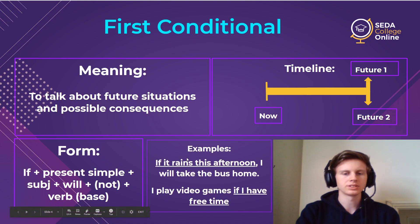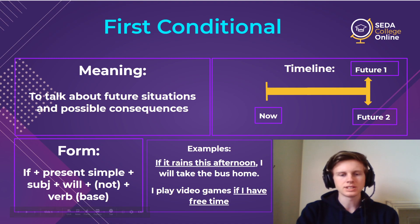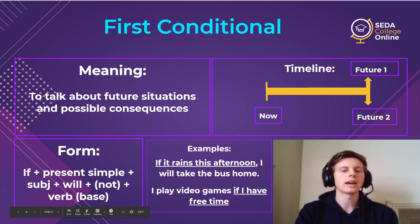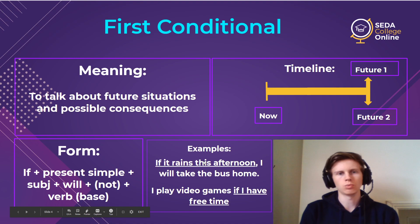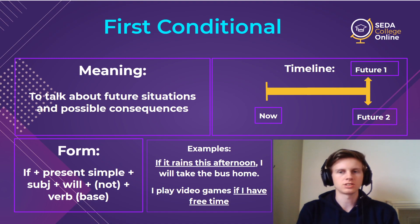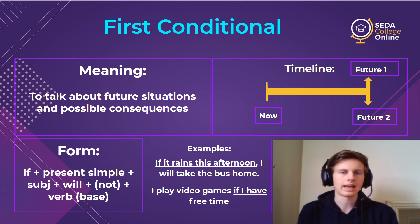Here are some examples. 'If it rains this afternoon, I'll take the bus.' In our dependent clause — 'if it rains this afternoon' — we have 'rains' in present simple. Then in the independent clause, 'I will take the bus home,' we have our 'will' verb. That's how the first conditional works. It's always going to be present simple and 'will,' and it's always going to be about real things — things that are possible, things that you think might happen.